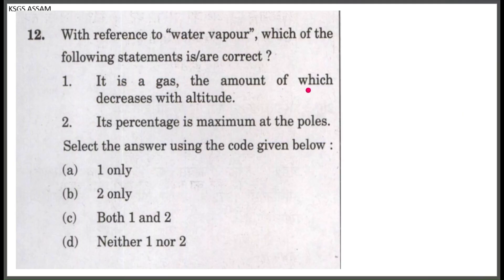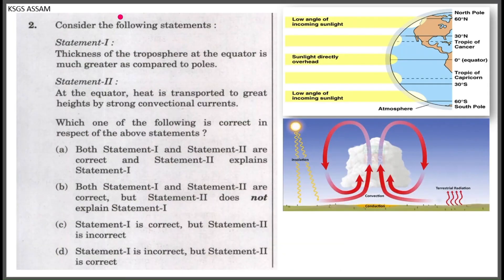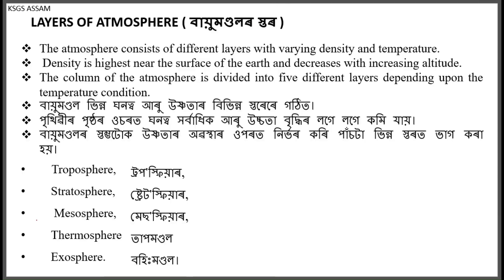It is a gas the amount of which decreases with altitude — yes, correct, it decreases with altitude. The thickness of the troposphere at the equator is much greater as compared to the poles. Now let's look at our atmosphere and its layers.